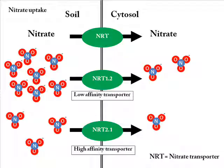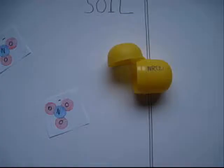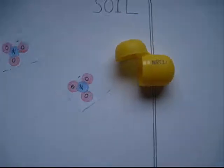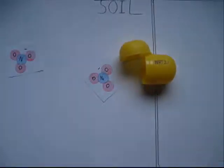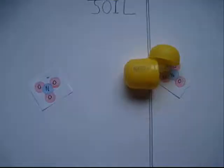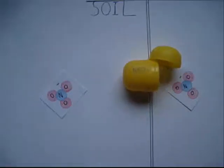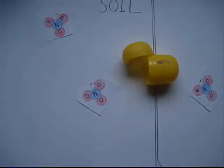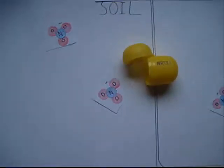The high affinity transporters have a high affinity for nitrate and work well for the uptake of nitrate in concentrations below 1 mM. The nitrate transporter NRT2.1 is the main high affinity nitrate transporter in Arabidopsis.